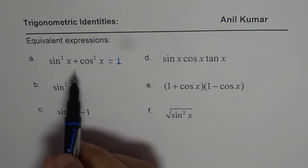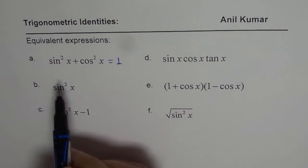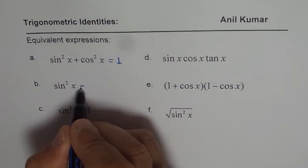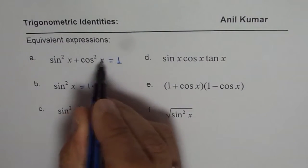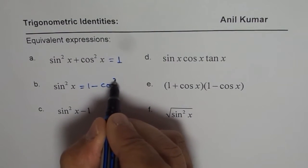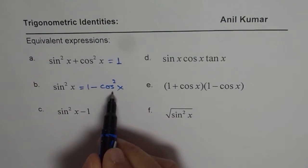Now part b, you can reorganize this. Sine square x could be written as equal to 1 minus cos square x. So that is how you could write sine square x.